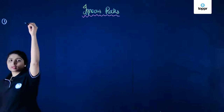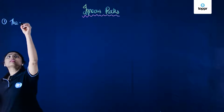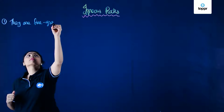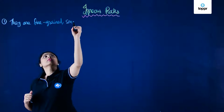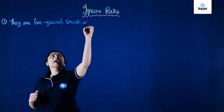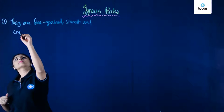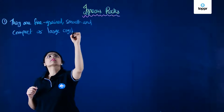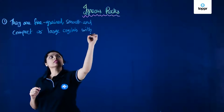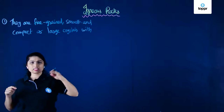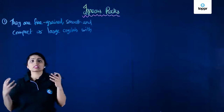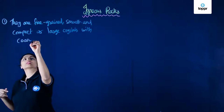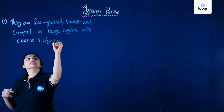The first characteristic is how do they look? They can be fine-grained, smooth and compact, or they can have large crystals with a coarse surface. Coarse means not very smooth — it has a lot of friction. If anything is on it, a lot of friction is created because of the rough surface. So we can call it a coarse surface.